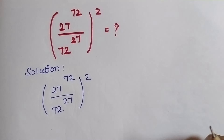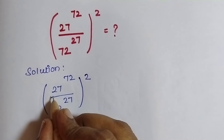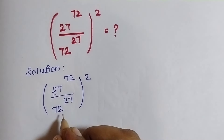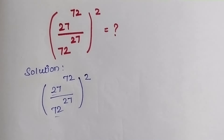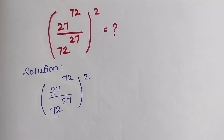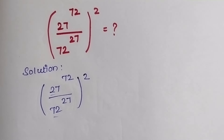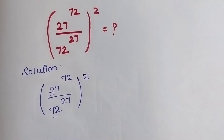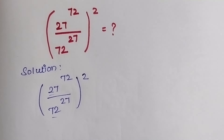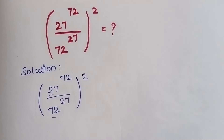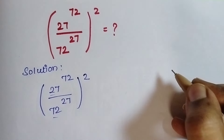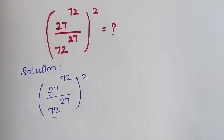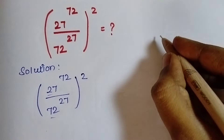Before solving this problem, first we need to know the relation between 27 and 72, and also what the equivalent forms of 27 and 72 are. In order to find that, we need to take the prime factorization (LCM) of 27 and 72.